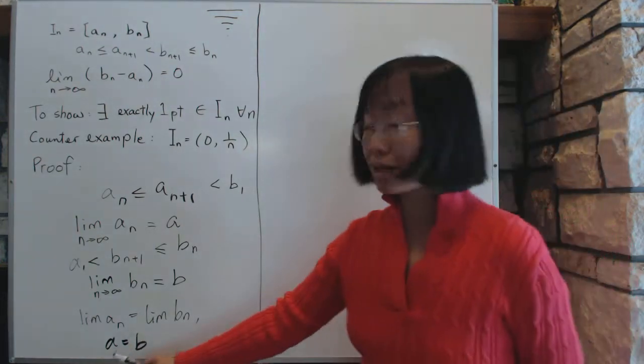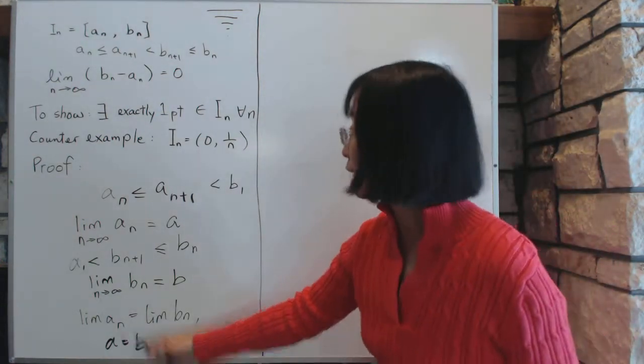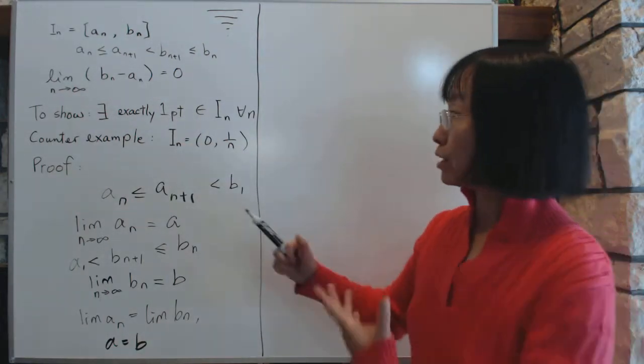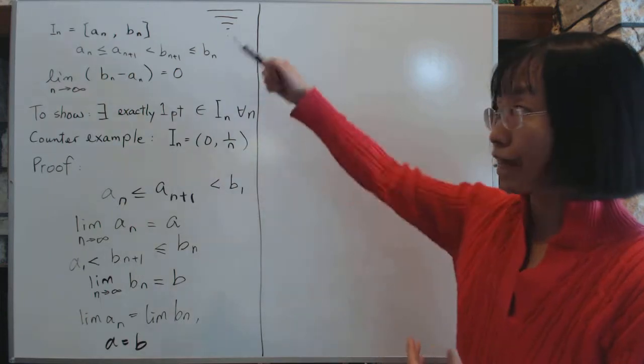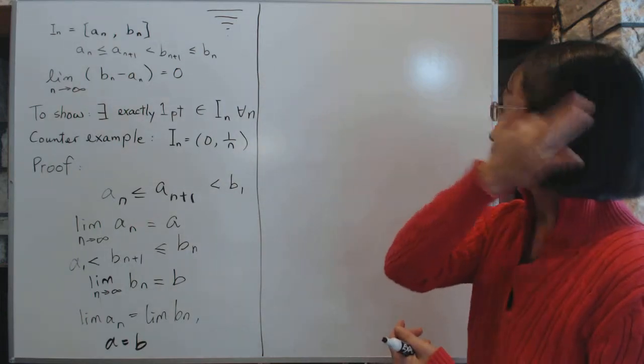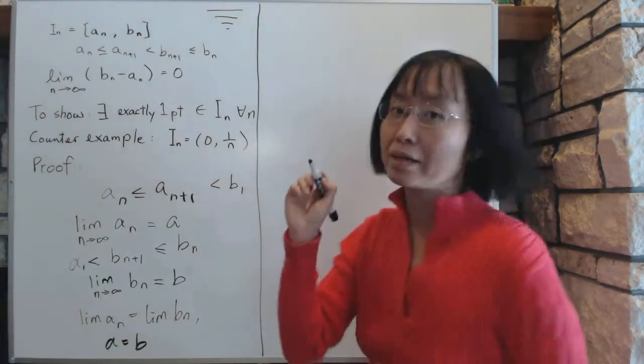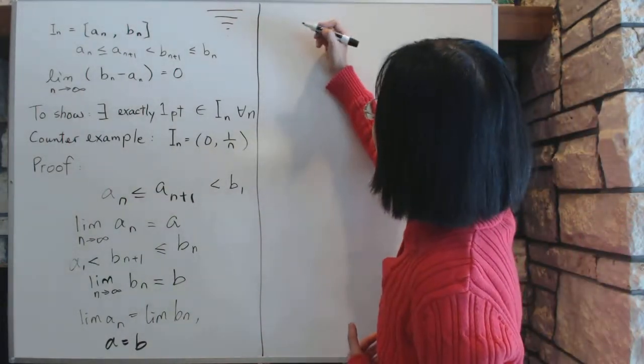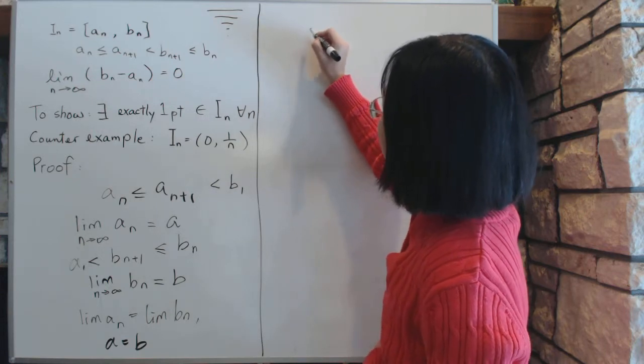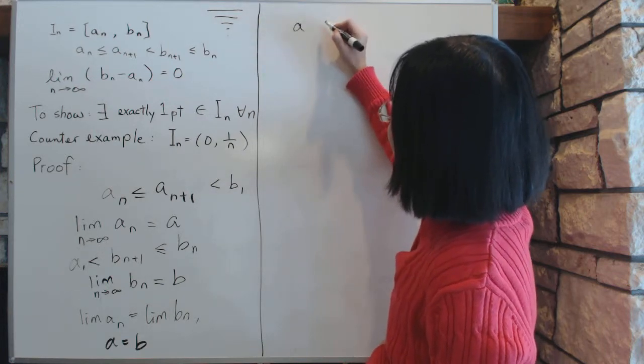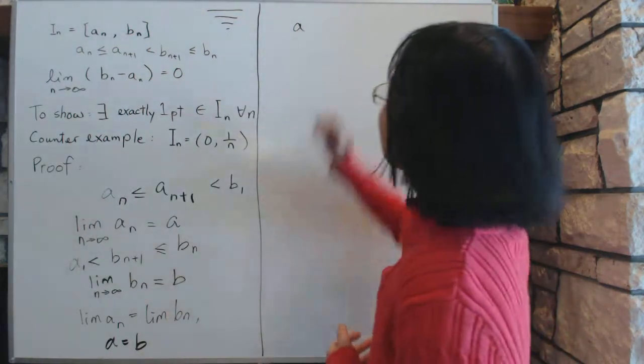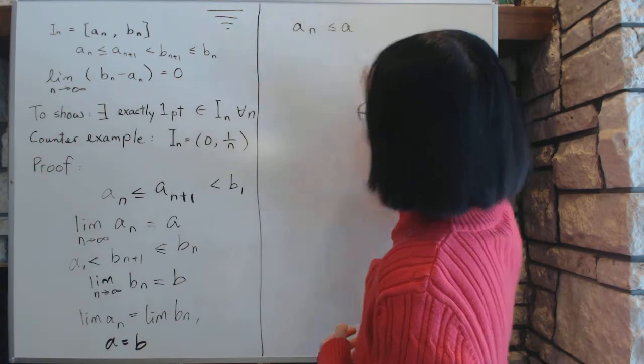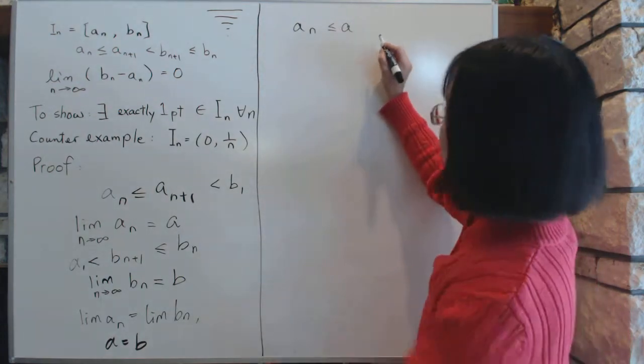Now, we are trying to prove that a, which is the same as b, is exactly the point that we're looking for. That is, a belongs to every interval that we have. Now, how do we know a belongs to every interval? Because a is the upper limit, is the least upper bound. a is the least upper bound, which means that a_n is less than or equal to a. And we know that. But a is equal to b.